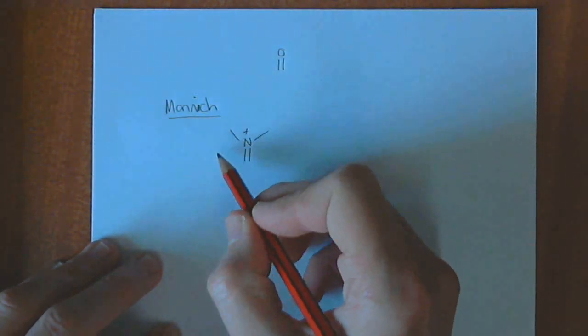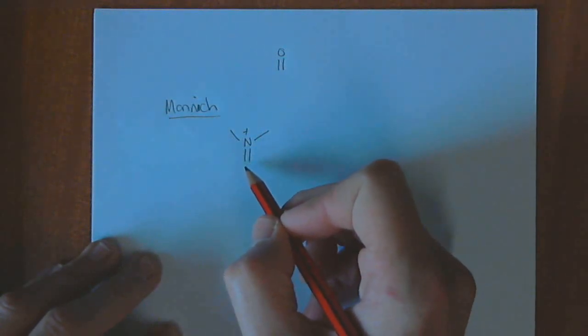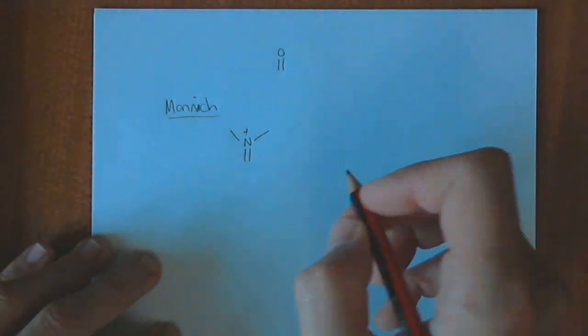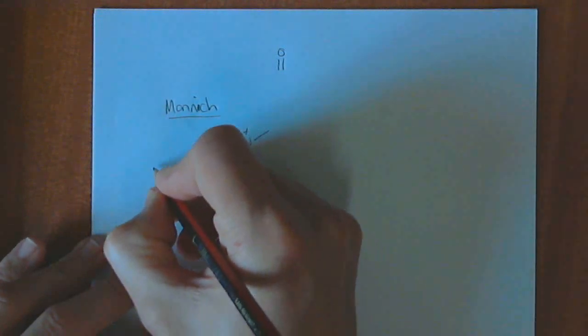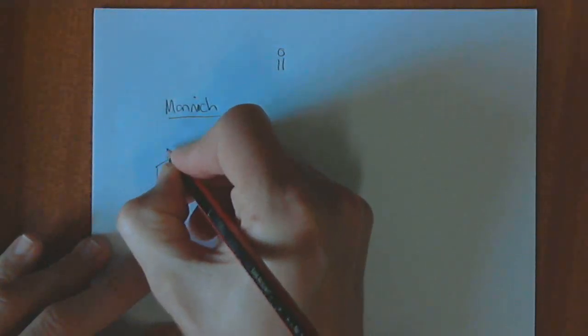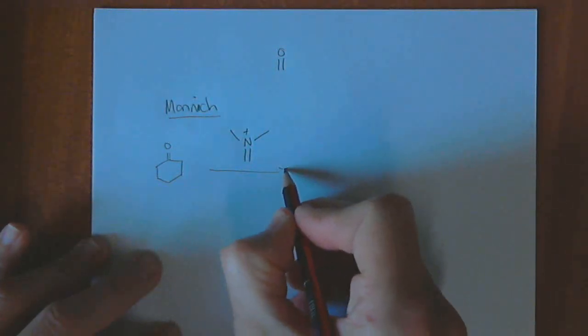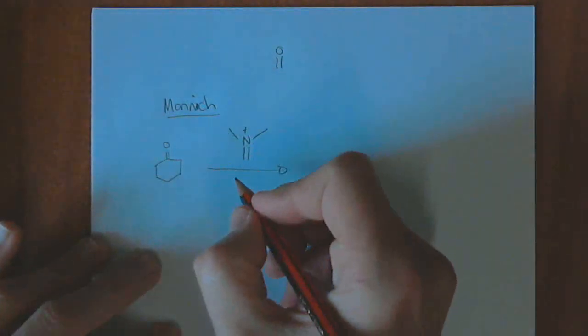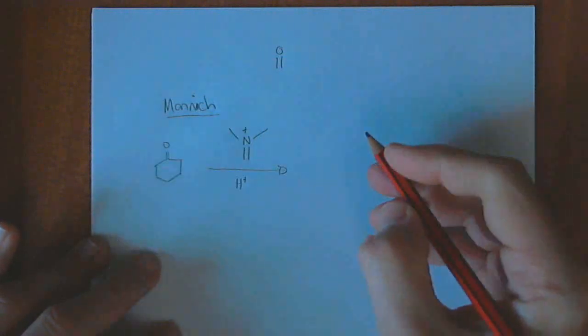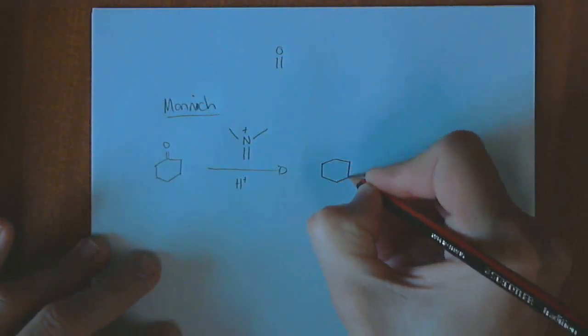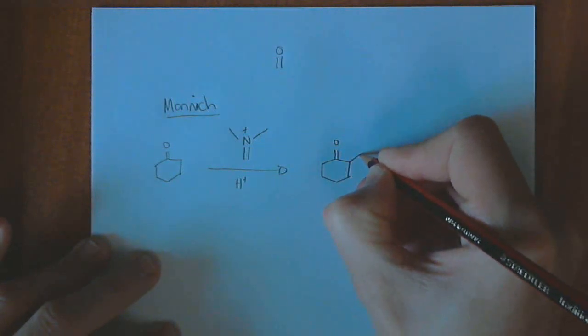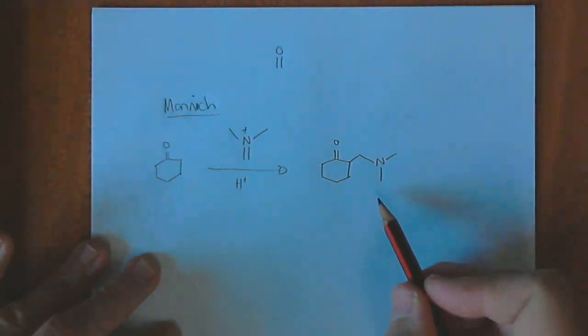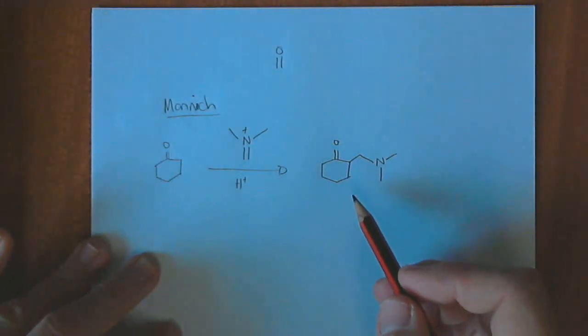So if we had to make something like this and react it with an enolate, we can get some new carbon-carbon bonds being formed. The overall reaction, for instance with cyclohexanone, under acid catalysis, the product would look like this. We're putting on a new carbon-carbon with a nitrogen and the two methyl groups. If you can't see that straight away, don't worry, we'll follow through with the mechanism.